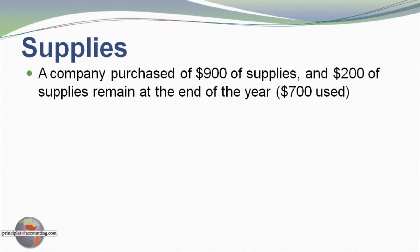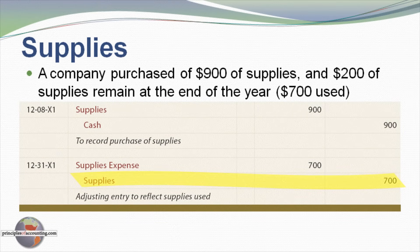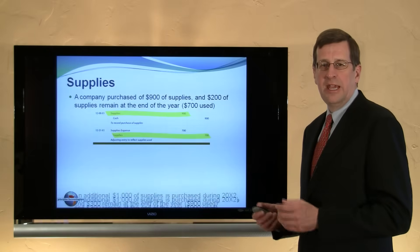Let's look at the journal entries. On December 8th, supplies were purchased for $900. The entry to record the purchase of that asset: debit supplies and credit cash for $900. The adjusting entry on December 31 entails a credit to supplies for $700 to reflect — or reduce — the asset account for the amount that's been used up, and that is transferred to supplies expense. That's the first year of operations for this business.